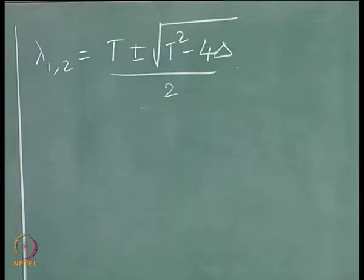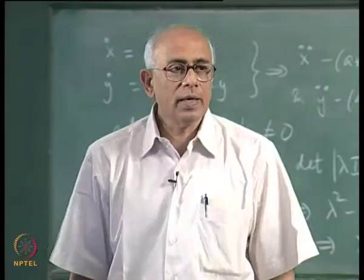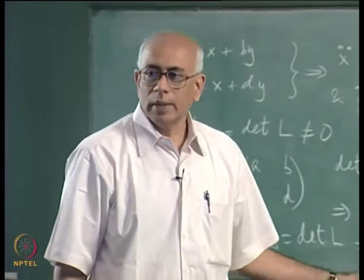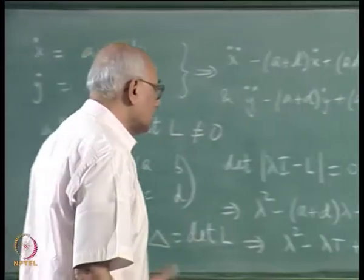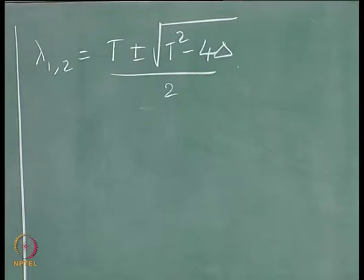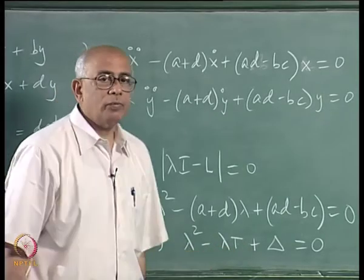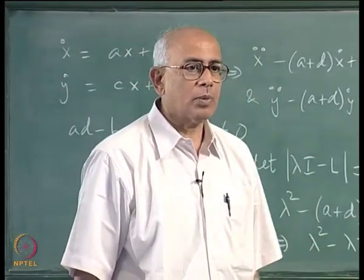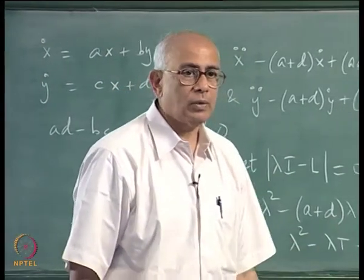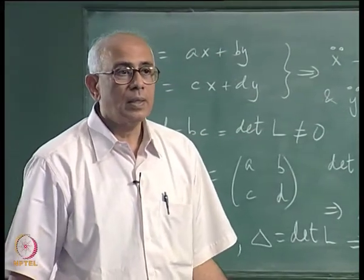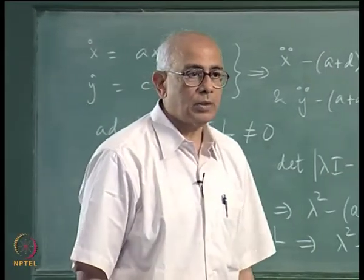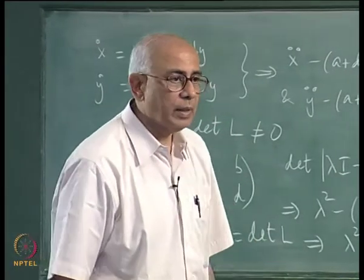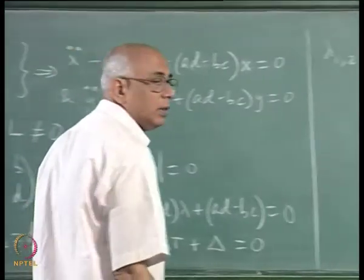One quantity is the sum of the eigenvalues (the trace) and the other is the product of the eigenvalues (the determinant), because the coefficient of the linear term is minus the sum of the eigenvalues and the last coefficient is the product of the eigenvalues. These two quantities are independent of what sort of linear transformations you make on the matrix.